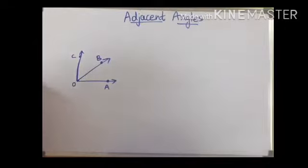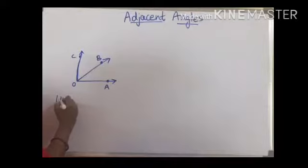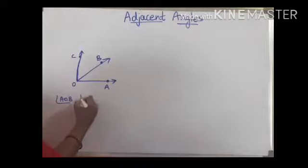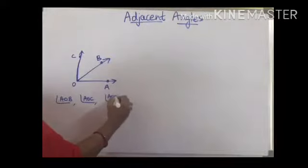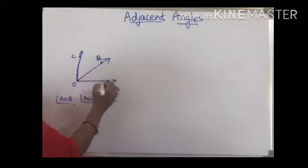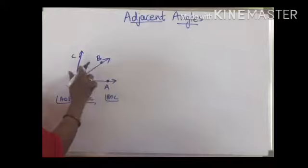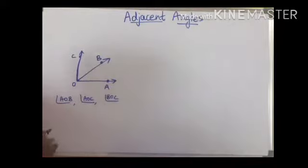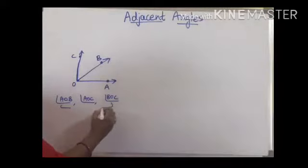Can you see now how many angles are found in this figure? If you observe, angle AOB is one angle, angle AOC is one angle, and angle BOC is one angle. So AOB, AOC, and BOC — and the whole angle is one. Now if you see these two angles, which are the two angles? AOB and BOC.